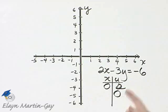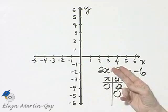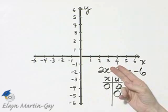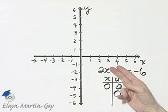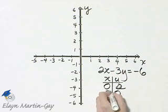What about if y is zero? If y is zero, this term is gone, and I'm solving 2x equals negative 6, divide both sides by 2, and I would have that x is negative 3.